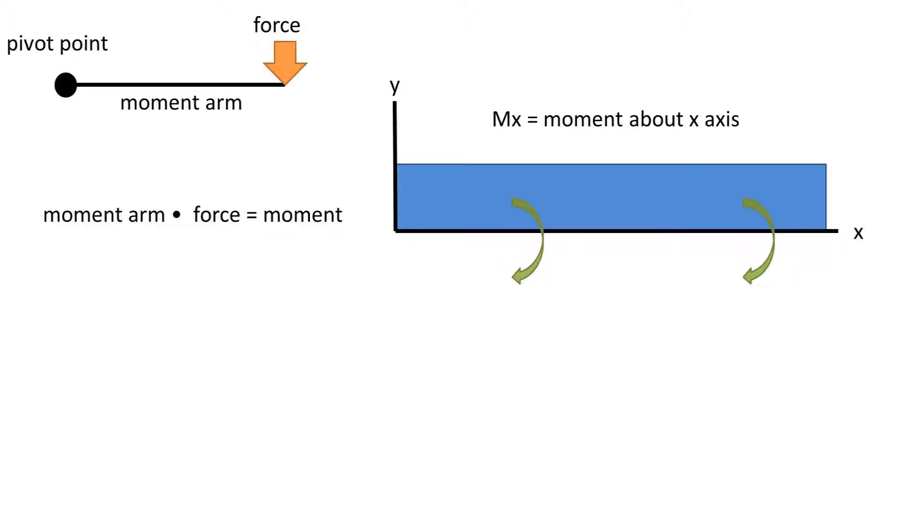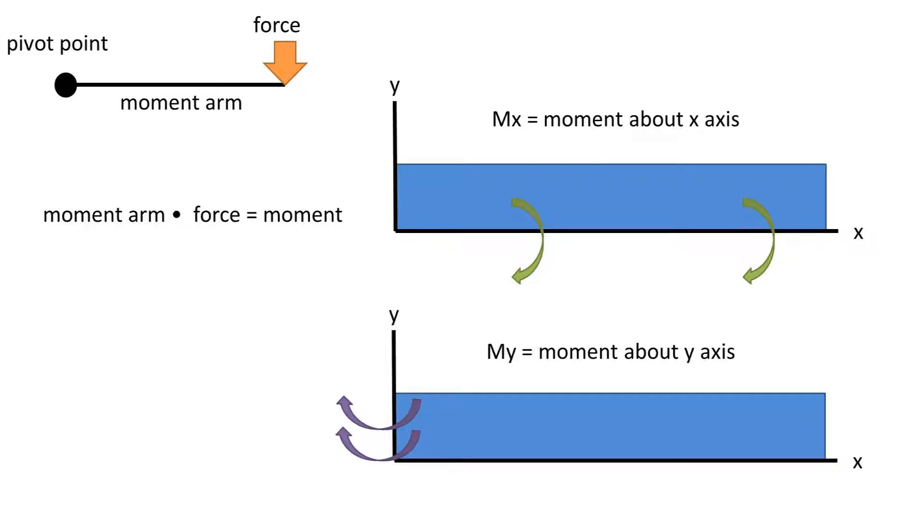We will be interested in two different moments: the moment about the x-axis and the moment about the y-axis. As you can see here, the shape is spinning around the axis as if the side next to the axis is attached and is a pivot point.